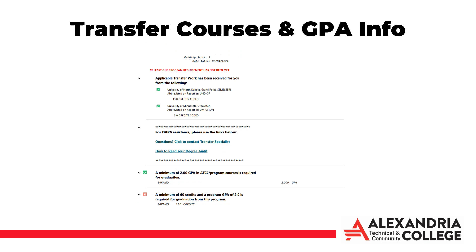You will also notice that transfer work is listed on your degree audit report. If you have existing college coursework from another college or university that is applicable to your program, you will see the information listed here, including the institution the credits were transferred in from, the number of completed credits transferred in, and any in-progress credits waiting to be transferred in. Further down on the audit is where you will see the individual courses and how they apply to your program requirements and/or MNTC courses.